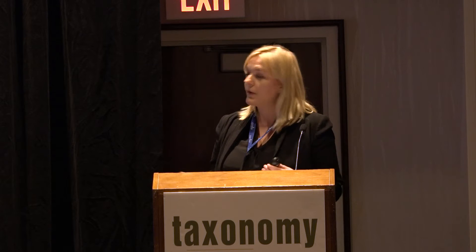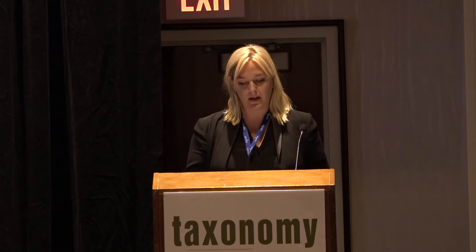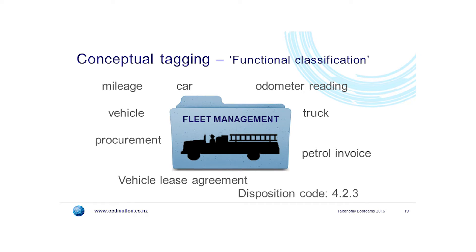So we pick up on all the evidence terms like procurement — is it a petrol invoice, is it an odometer reading — and we use the relationships, the classes, the rules and those evidence terms to still get that functional classification onto that content, because none of it says 'fleet management' on it. We can then trigger the records disposition code off that because we're recognising that it's to do with this function and it's this kind of document.